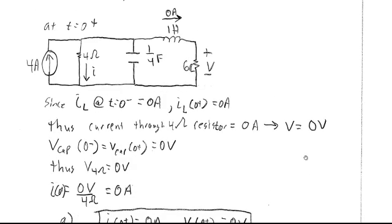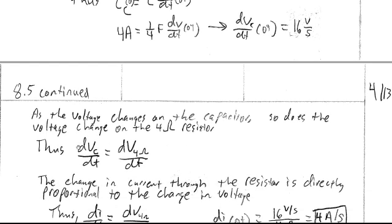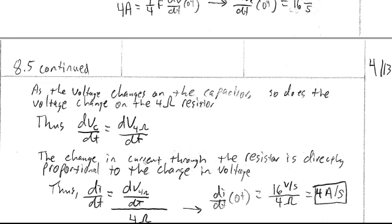Because the capacitor is in parallel with the 4 ohm resistor, the voltage across the 4 ohm resistor is changing at the same rate — 16 V/s. So dV_C/dt equals dV_{4Ω}/dt. By Ohm's Law, voltage and current in a resistor are directly proportional, so an instantaneous change in voltage produces a proportional change in current.